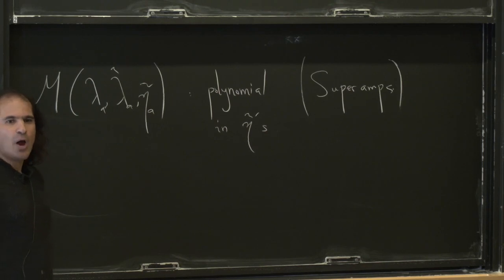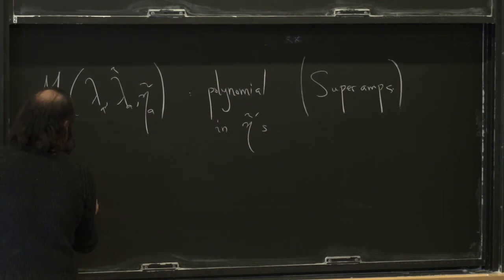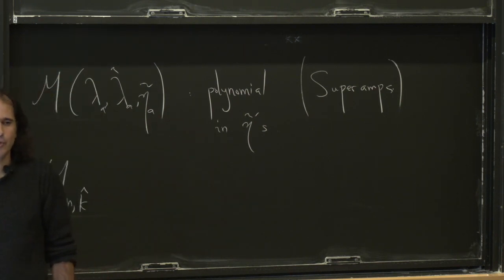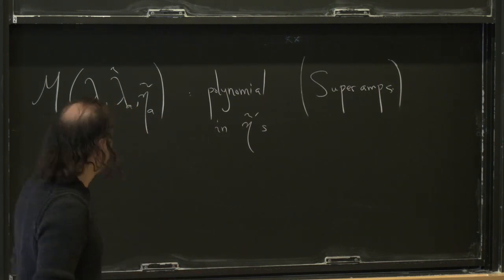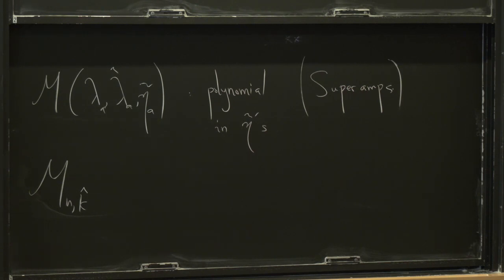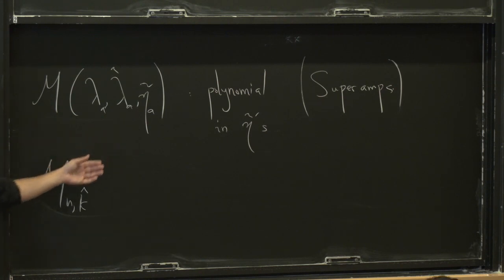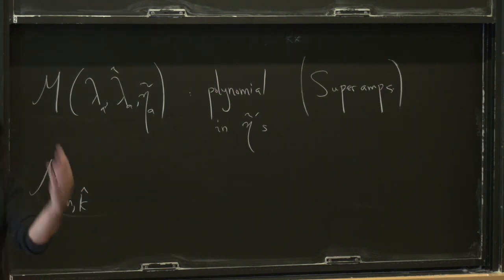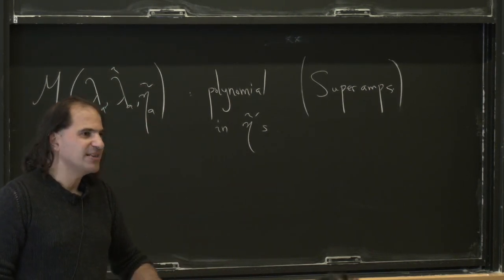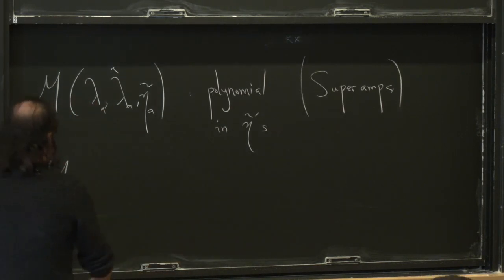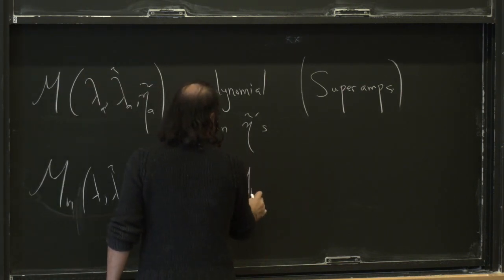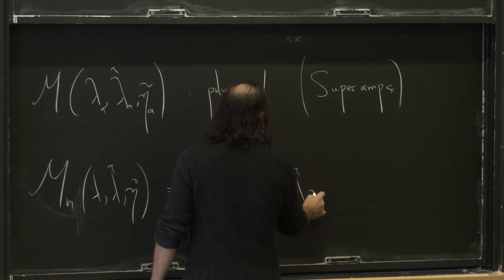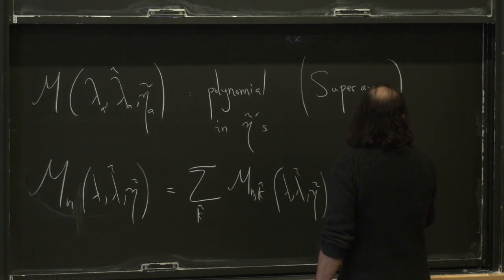At this point we introduce a variable called k-hat. Because this is a polynomial in eta-tilde, it's reasonable to decompose it into pieces with different numbers of eta-tildes. Now let's think about how many eta-tildes we can possibly have. Because we have these four indices and everything is only contracted by the epsilon symbol, M can have no eta-tildes, four eta-tildes, eight eta-tildes — it has to be a multiple of four. So we write M_n as a sum over k-hat of M_{n,k-hat}, where each piece has precisely 4*k-hat eta-tildes in it.